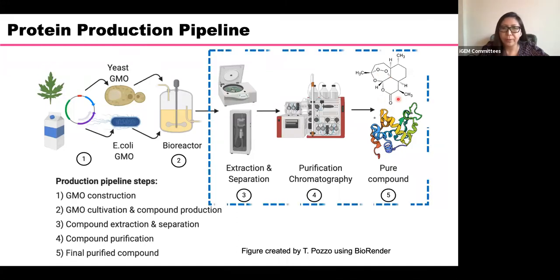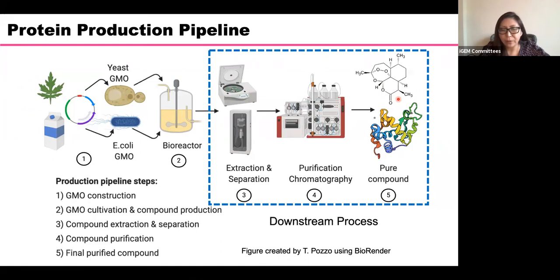In this section, I will talk about these three parts — cell separation, clarification, and purification — which in industry are collectively called downstream processing.